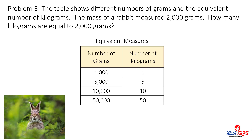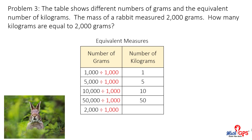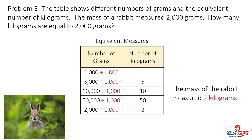Problem 3: The table shows different numbers of grams and the equivalent number of kilograms. The mass of a rabbit measured 2,000 grams. How many kilograms are equal to 2,000 grams? Look at the table. What is the process? Divide by 1,000. What is 2,000 divided by 1,000? 2,000 divided by 1,000 equals 2. The mass of the rabbit measures 2 kilograms.